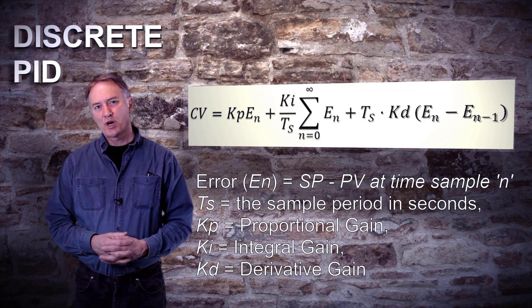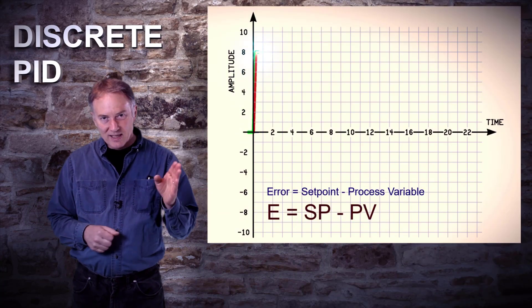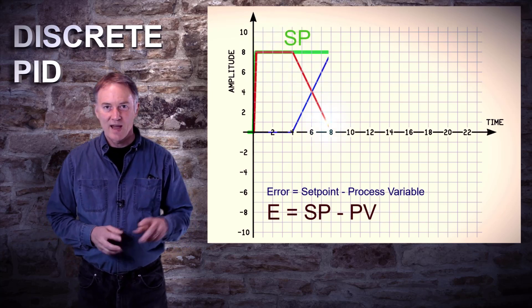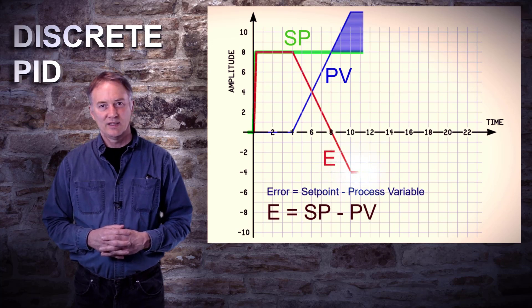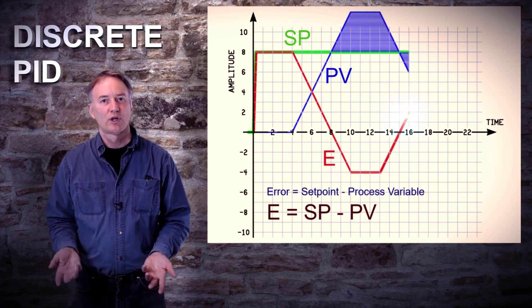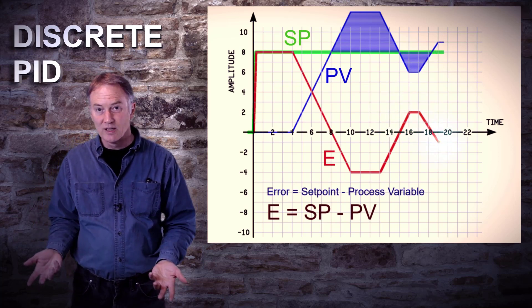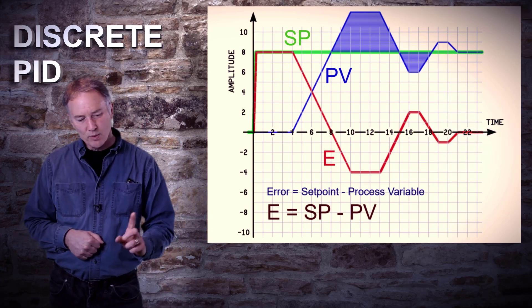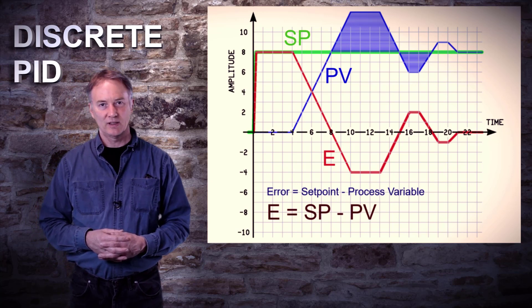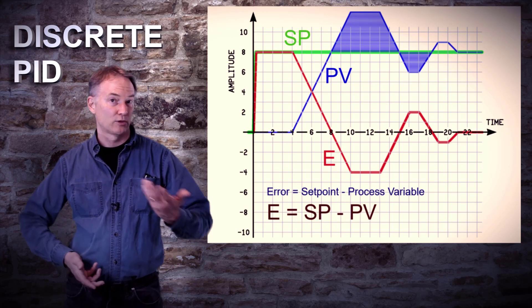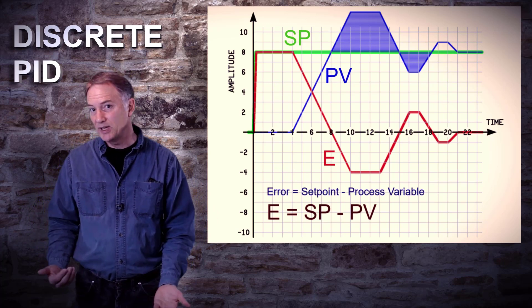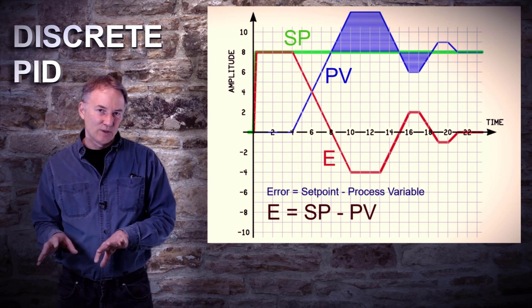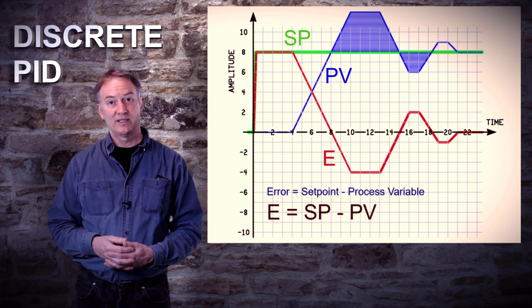Looking at the next chart, we see that at discrete time intervals we are sampling the PV and SP values. We have a step response and then we calculate an error. The error is shown as a red curve, the blue curve shows the process variable, and the green line is our set point. As we go through, you can see how the error is calculated — sometimes positive when the set point is larger than the process variable, and sometimes negative.